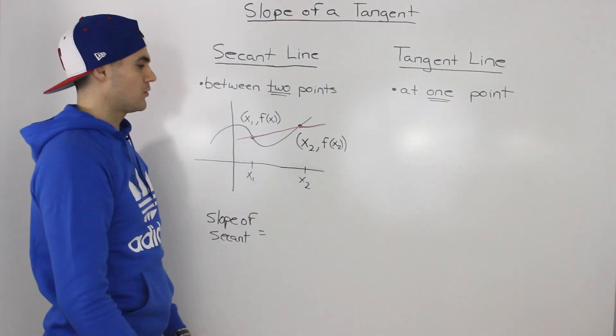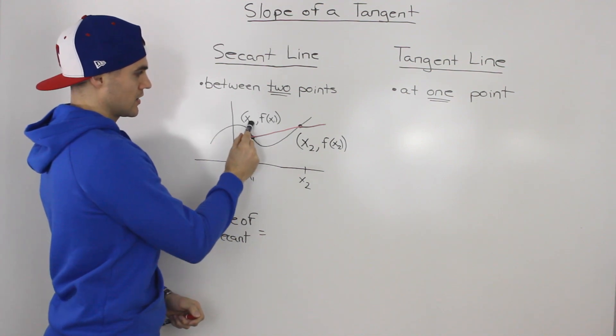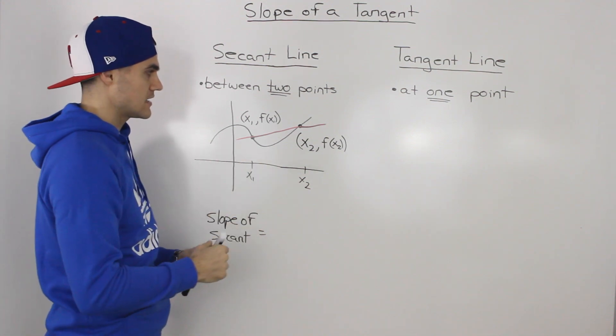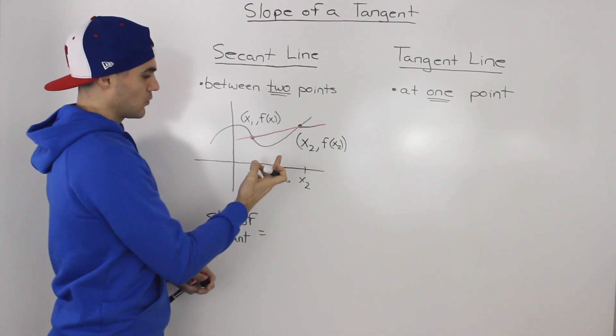Well, how would we do that? We know that the coordinate of this point is going to be x1, and then the y value would be f of x1. We don't know what f is in this case, so we'll just keep it in that notation, but that's what the y value would be.